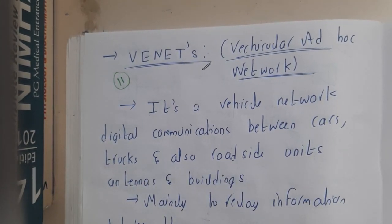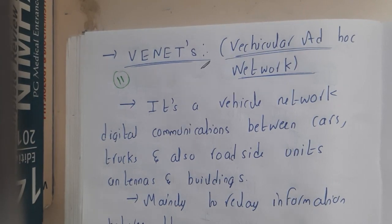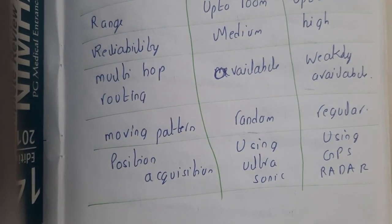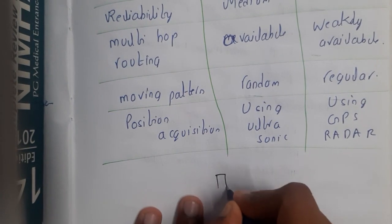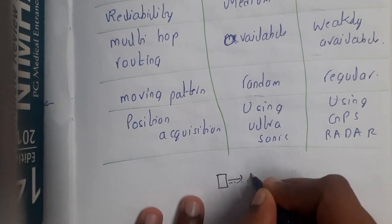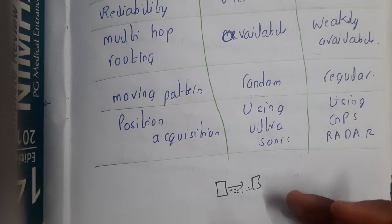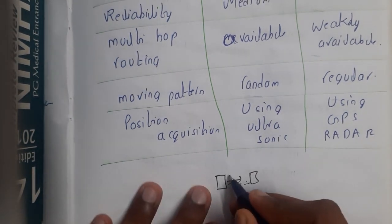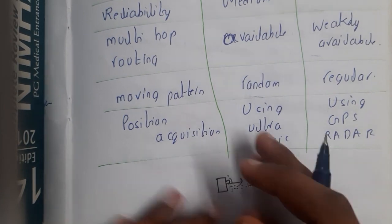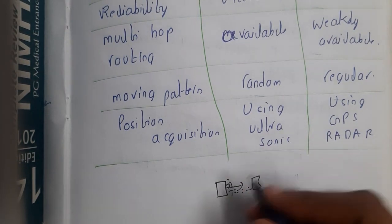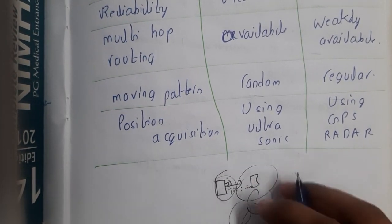Can cars communicate with each other? Let's take the example of a Tesla car — most of you have seen a video on Tesla's automated driving. Whenever the car is moving, it sends signals; when those signals strike an object, they come back, and based on that the car finds distance and speed. There are cameras using machine learning algorithms to identify objects — whether it is a human, a dog, an animal, an obstacle, or a traffic sign. So it is indirectly communicating with objects on the road.